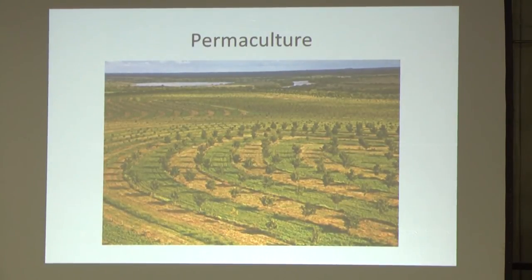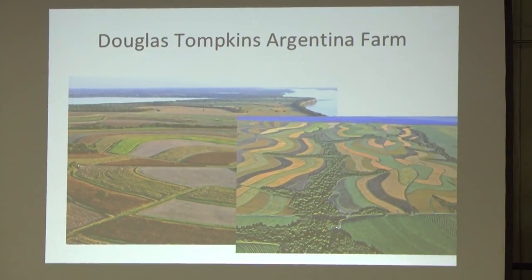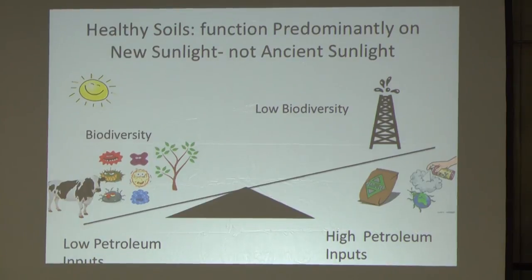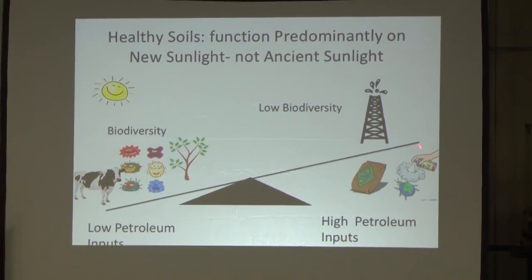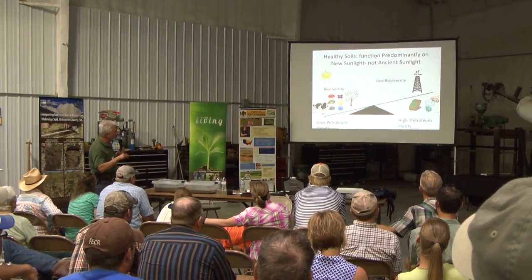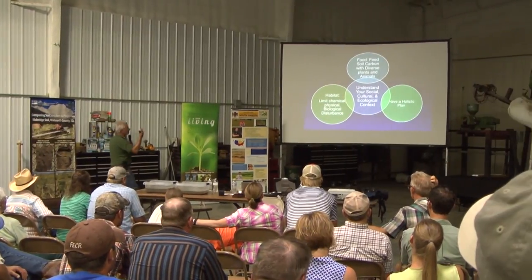That is where I would love to see our country go — integrating trees, animals, all of it together to create that kind of beauty. That farm is run by biodiversity. You have to ask yourself: is your farm driven by ancient sunlight or new sunlight? The farms continuing to run on fossil fuel dependency will go broke. The farmers running on diversity and new sunlight will make it in the 21st century.